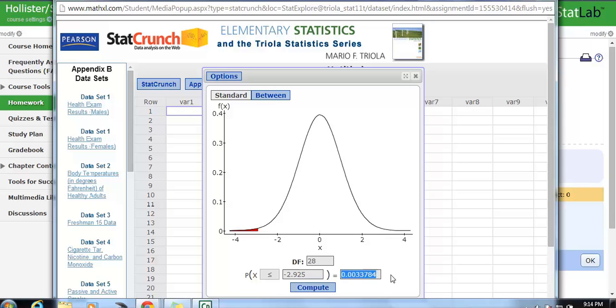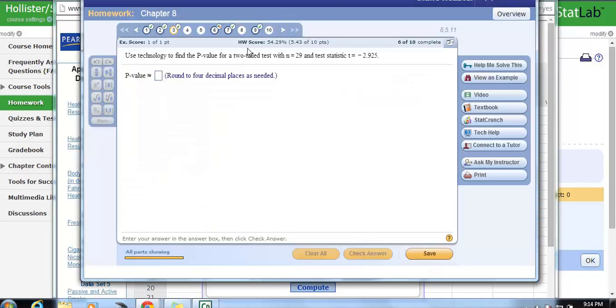So this shows us that the chance of getting a value below a t value of negative 2.925 is 0.003374. Pretty small percentage chance, 0.33%, 0.34%.